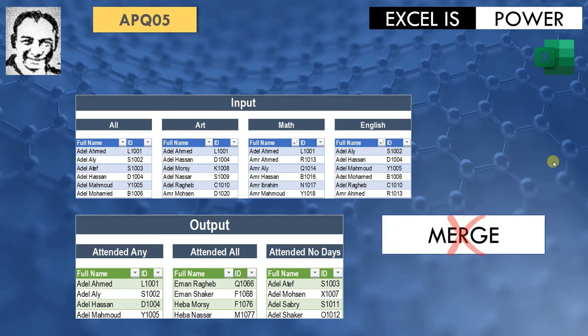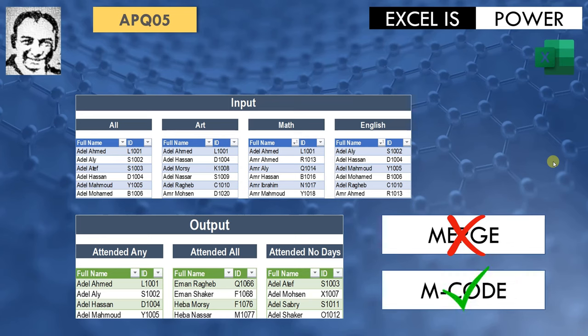Usually we do this using merge. However, because we are comparing more than two tables, we are going to use M code functions. Specifically, we are going to use the list functions from the M code language.